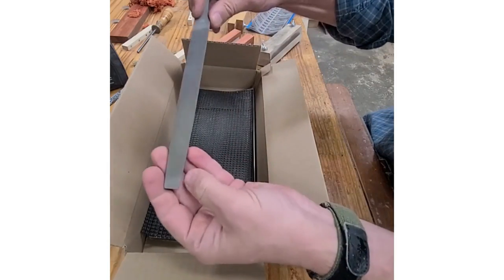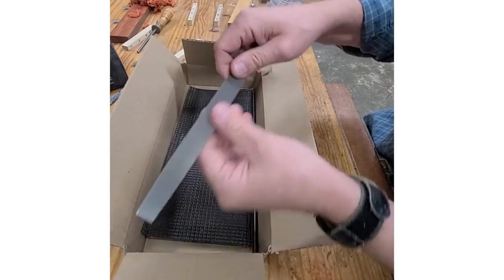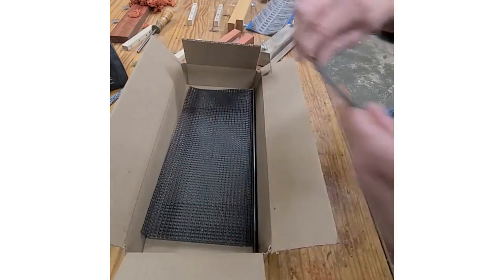You get a file, an 8-inch mill file that will help you prepare the initial edge of a scraper. Also, if you need to remove a burr and create a new burr, this is great for doing that.